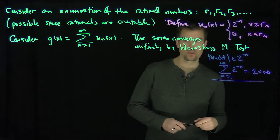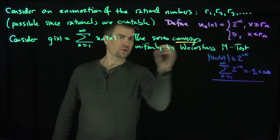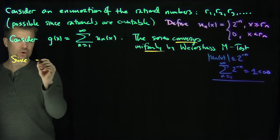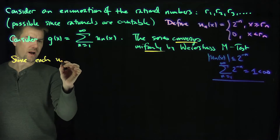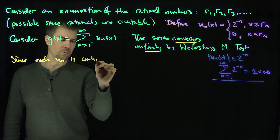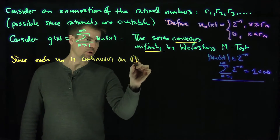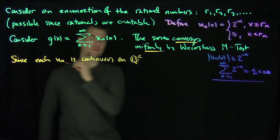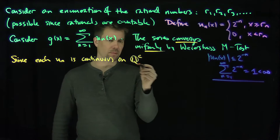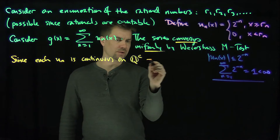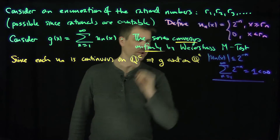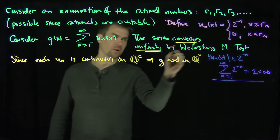We can also note that since each u_n is continuous on Q-complement — all of these functions are continuous on the irrational numbers — we have that g is continuous on the irrational numbers by the uniform convergence.